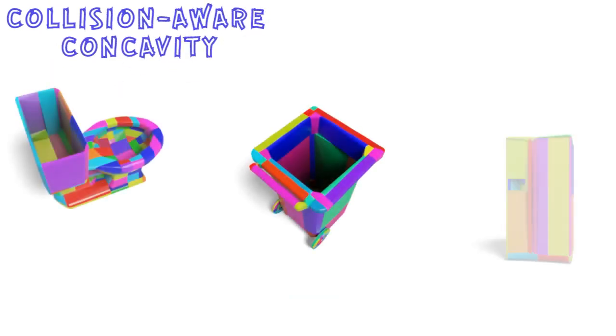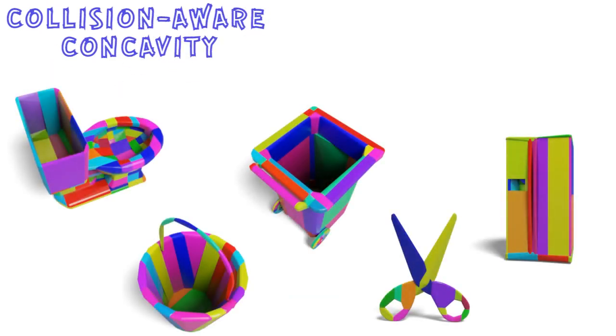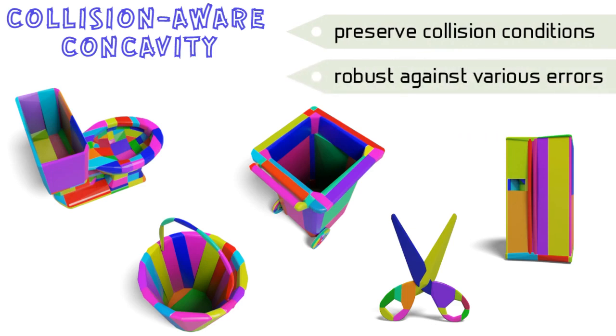Our proposed concavity can better capture shape differences and address the failure cases of the existing concavity metrics. It's sensitive to detect approximation errors that significantly alter the collision conditions, whether they are fine-grained structures with small volume or thin planar structures.